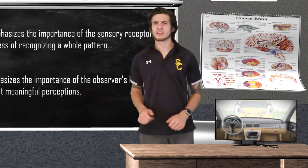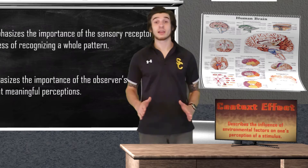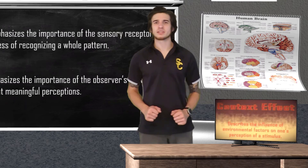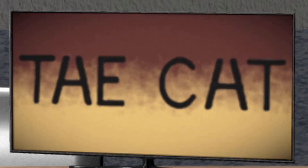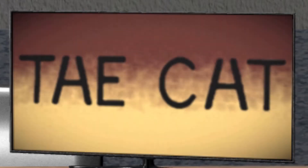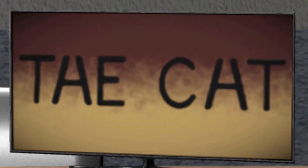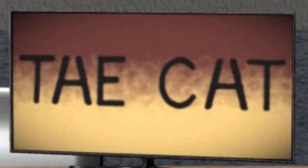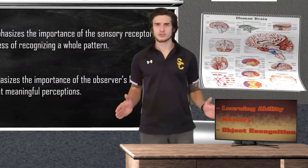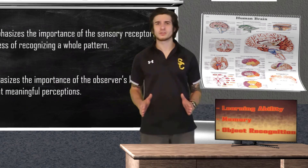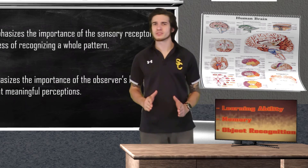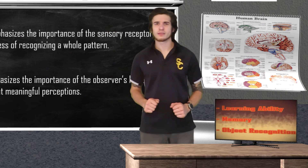Schemas are not the only explanation for why a given stimulus may trigger different perceptions — we also have the context effect. The context effect explains how environmental influences can direct perception. To explain the context effect, I want you to take a look at this symbol. What exactly does this symbol mean to you? How about we provide some context? Did you read 'the cat'? Notice how you had little trouble reading the symbol both as H and A in their appropriate context, even though they take on the same form. Context effects are present in our daily lives as well, with things such as learning ability, memory, and object recognition. Research has even shown that the type of floor a consumer is standing on while reviewing products can affect their assessment of the product.